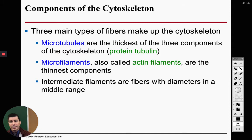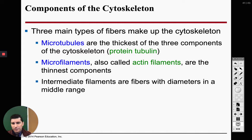We have a few different types of fibers. Microtubules are made out of a protein called tubulin — just think tubules, tubulin. These are going to be the very thick ones. The thinner ones are going to be microfilaments. Think of the A in microfilaments — they're made up of a protein called actin.